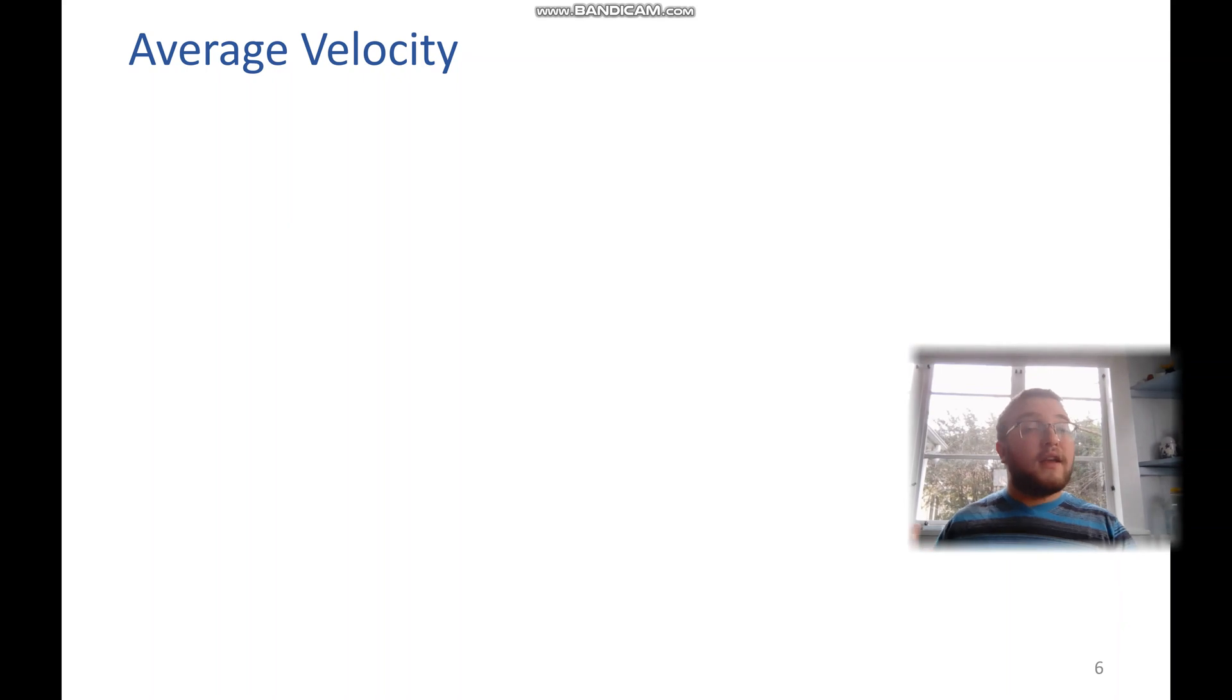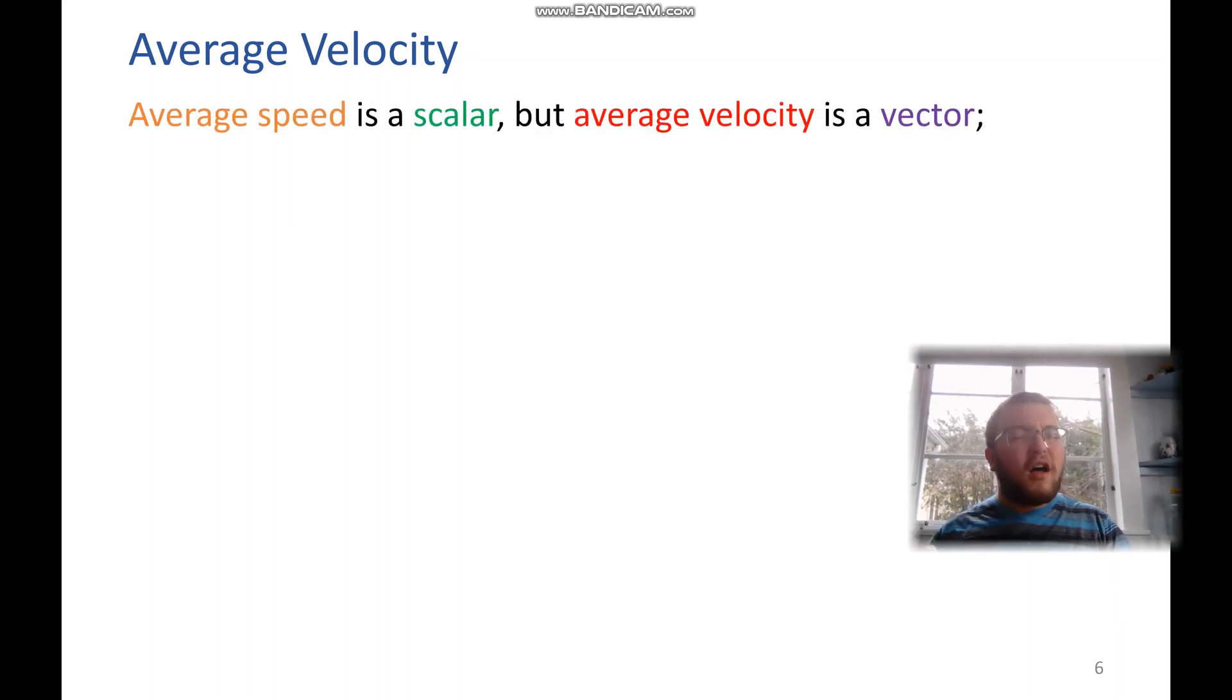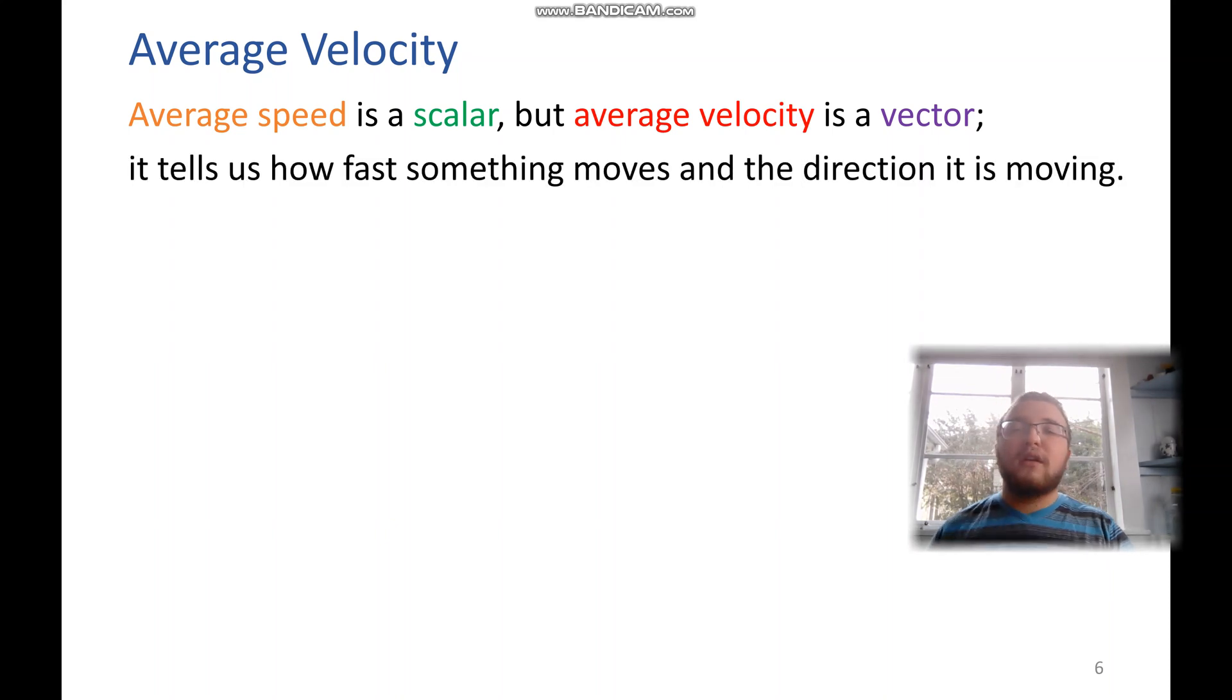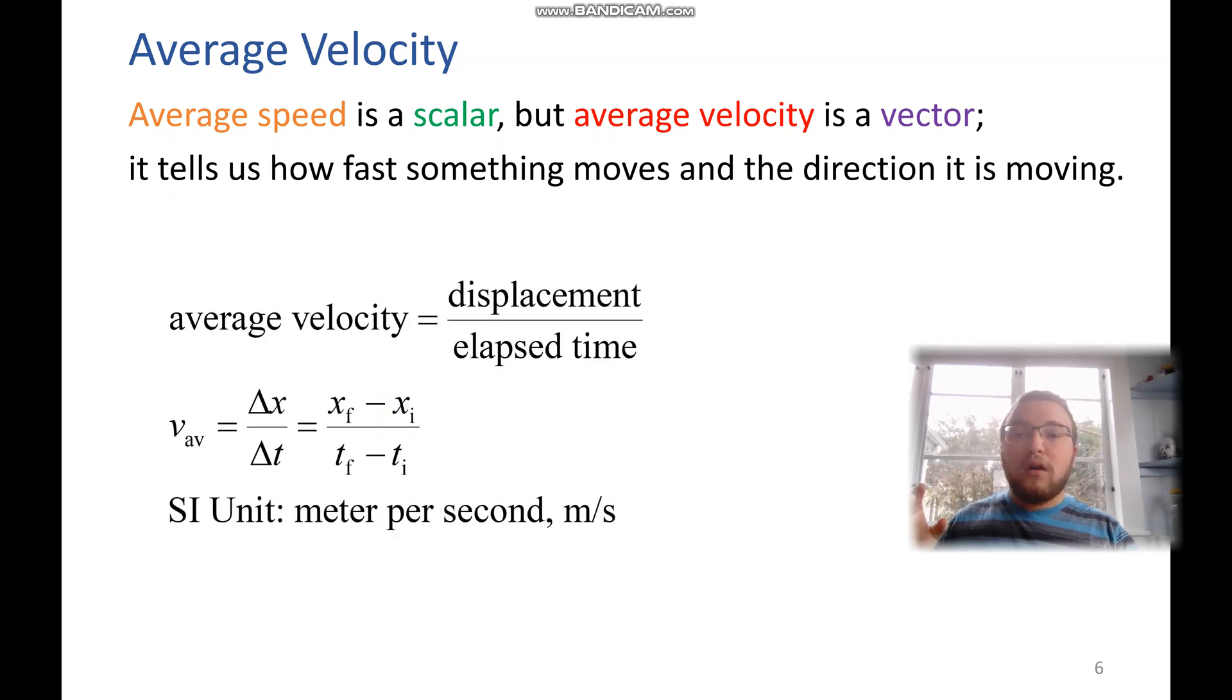Average velocity is different from average speed. Speed is a scalar, but velocity is a vector. And it tells us how fast something moves in the direction that it is going. So average speed was distance over time. Average velocity is displacement over time. And we represent that by saying delta x over delta t. And you'll notice that it has the same SI unit as average speed, the meter per second.